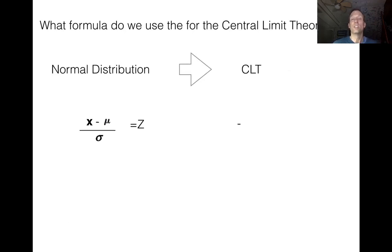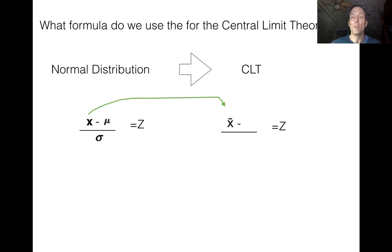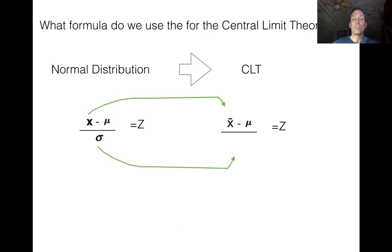We start with the same z-score formula we're always used to seeing and modify it for the Central Limit Theorem. We convert x to X-bar, because now we're analyzing the behavior of sample averages. Mu stays in the numerator because we're comparing the sample average to the population average. On the denominator, we take sigma and divide it by the square root of n. That gives us the modified z-formula for the Central Limit Theorem: z = (X̄ − μ) / (σ / √n).